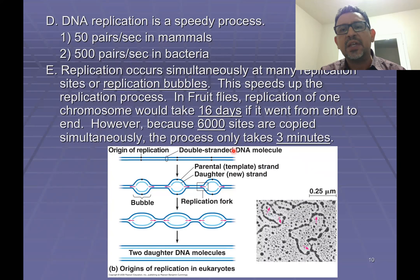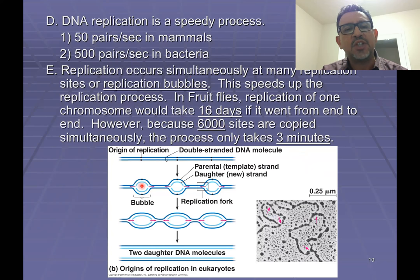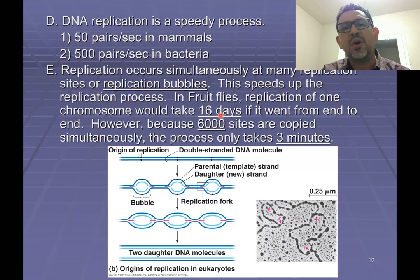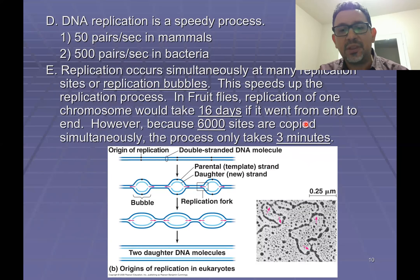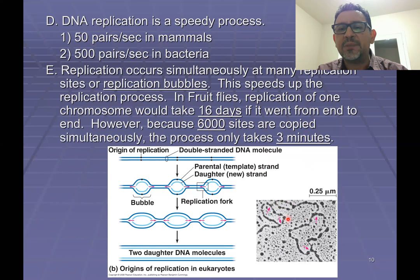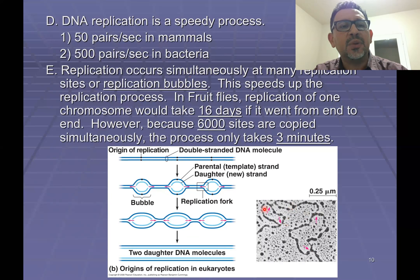But it doesn't take that long. In reality, the process takes only about three minutes. The reason is because in a single chromosome of a fruit fly, scientists have counted about 6,000 replication bubbles. These replication bubbles each come with two forks, and in each fork there's going to be a leading strand and a lagging strand being assembled. Because of all of these many places simultaneously copying DNA in one chromosome, the process only requires three minutes. In this illustration you can notice the picture of those replication bubbles — here's a replication bubble, here's another one, here is a larger replication bubble. This will be one replication fork, here's another replication fork, with more replication forks inside each one of these bubbles.